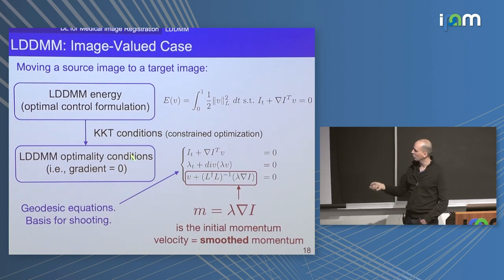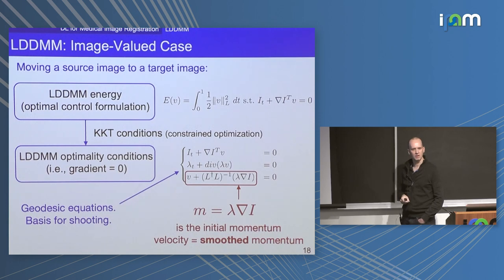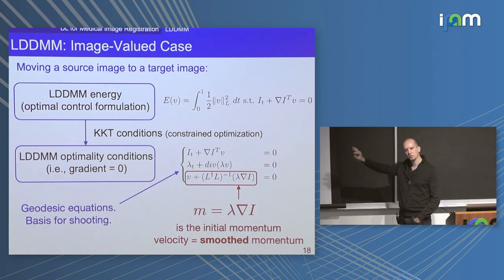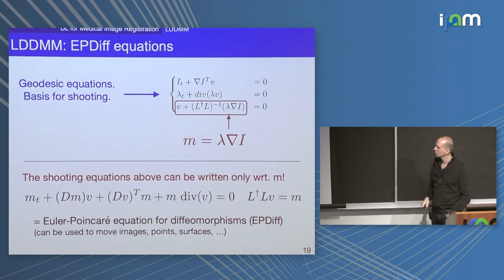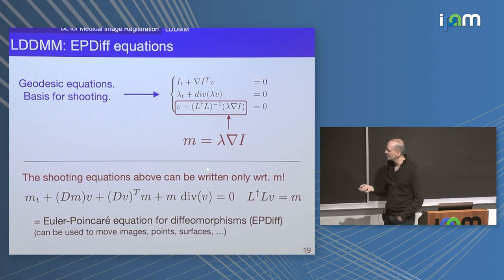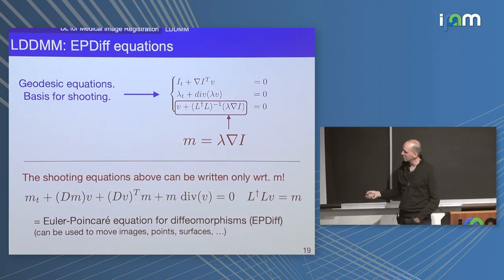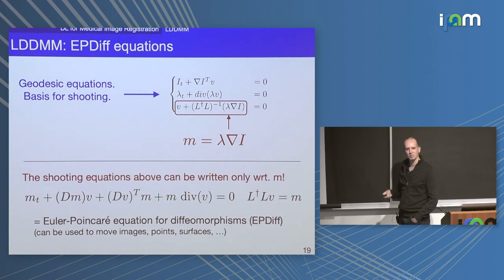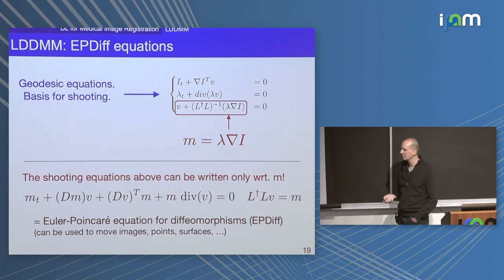At optimality, these equations need to hold, subject to boundary conditions. But you can also run this model forward in time. The geodesic equation then gives you the whole transformation across time if you know the initial image and the initial momentum — this is something called shooting. You're not optimizing over the entire spatial-temporal velocity field; you're just optimizing over the initial conditions. This equation is called the Euler-Poincaré equation for diffeomorphisms, and it describes deformation of space parametrized by this momentum vector field. You can use this to move points, surfaces, images — whatever you want.